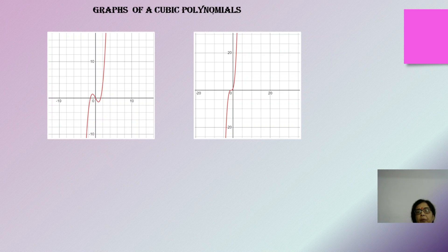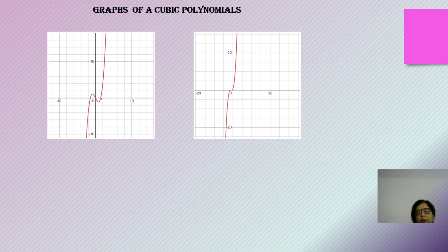These are graphs of cubic polynomials. Cubic polynomials have the highest degree as 3, so at most they will have 3 zeros. They can have all 3 zeros as different, all zeros the same, or two equal and one unequal. The graph line will intersect the x-axis at 3 points if all zeros are distinct. The general form is f(x) = ax³ + bx² + cx + d.